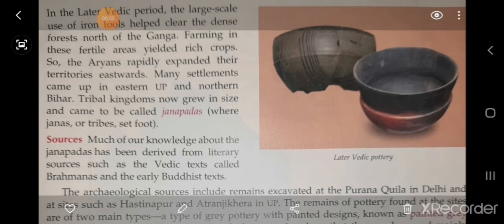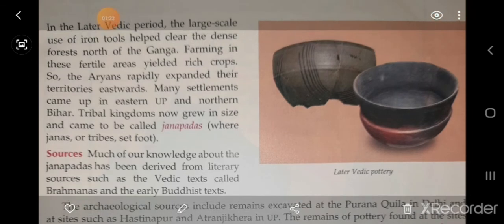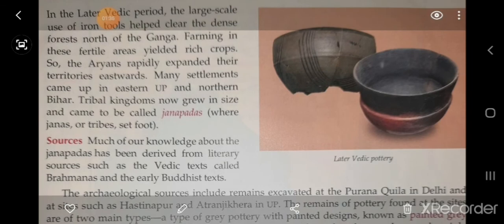A Janapada could be a republic or a monarchy. Republic means an elected ruler; monarchy means ruled by a single territorial ruler. The Janapadas gained control over large areas and became Mahajanapadas. There were altogether 16 Mahajanapadas, including Kosala, Vatsa, Magadha, Vajji, and Avanti. There were frequent wars among them, and ultimately Magadha emerged as the major power.